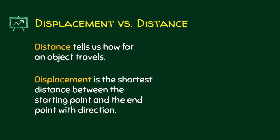Distance tells us how far an object travels, whereas displacement is the shortest. So let me emphasize this. It is the shortest distance between the starting point and the end point with direction. So take note that we have to consider the starting point and the end point.